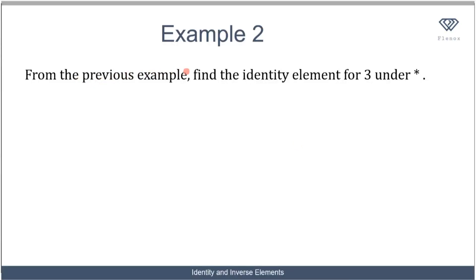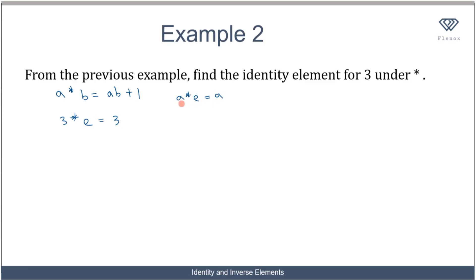Another example: from the previous example, find the identity element for 3 under the binary operation. We are told that a★b equals ab plus one. Now we are told to find the identity element for 3 under star, so that would be 3★e equals 3, because the formula for the identity element says a★e equals a, and in this case a is 3.